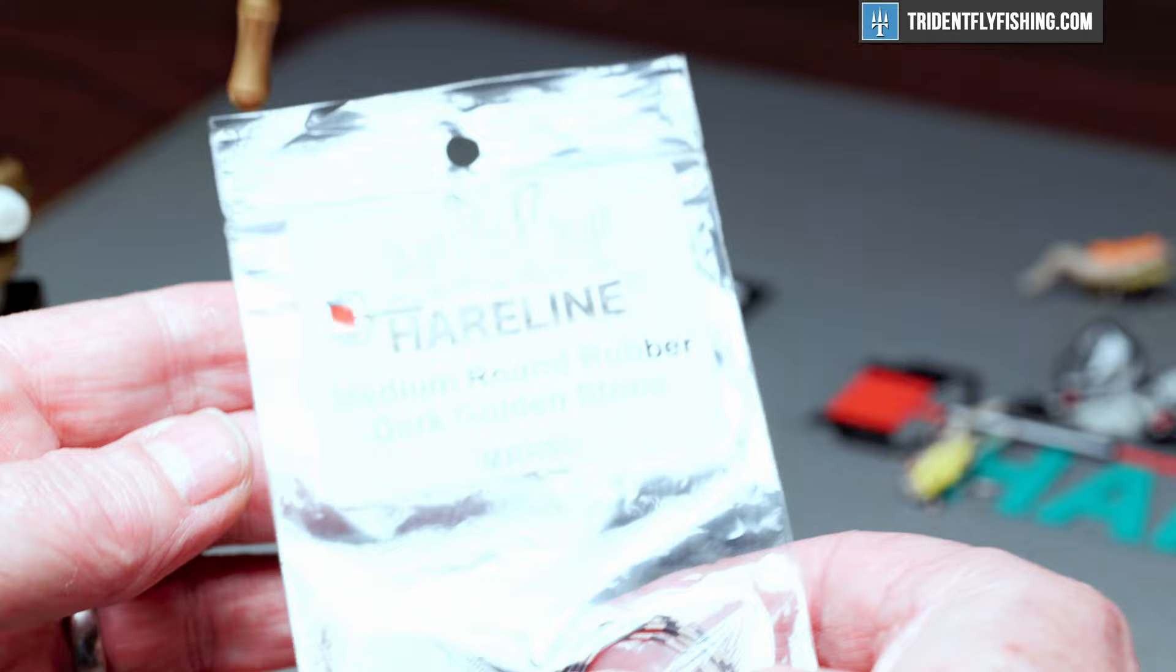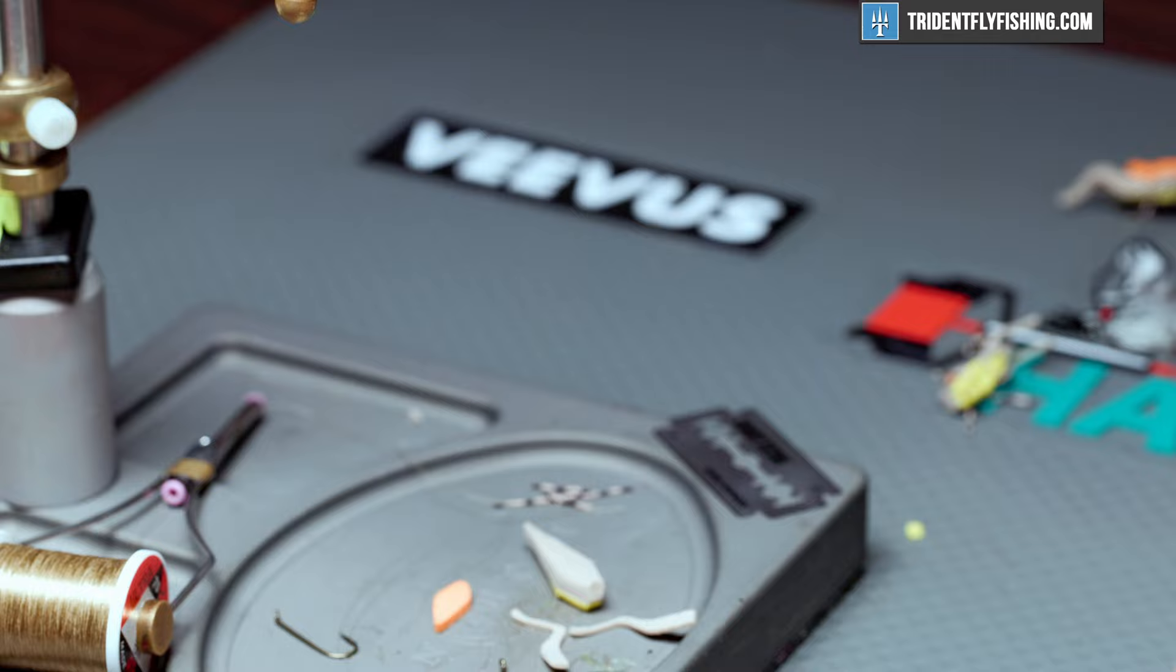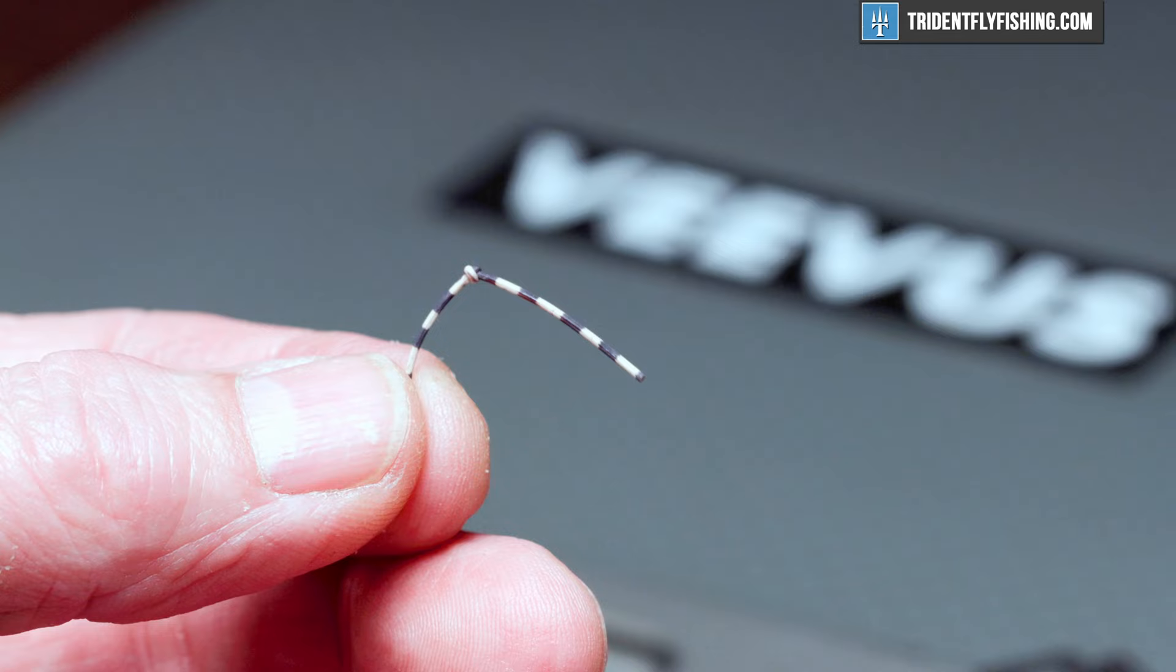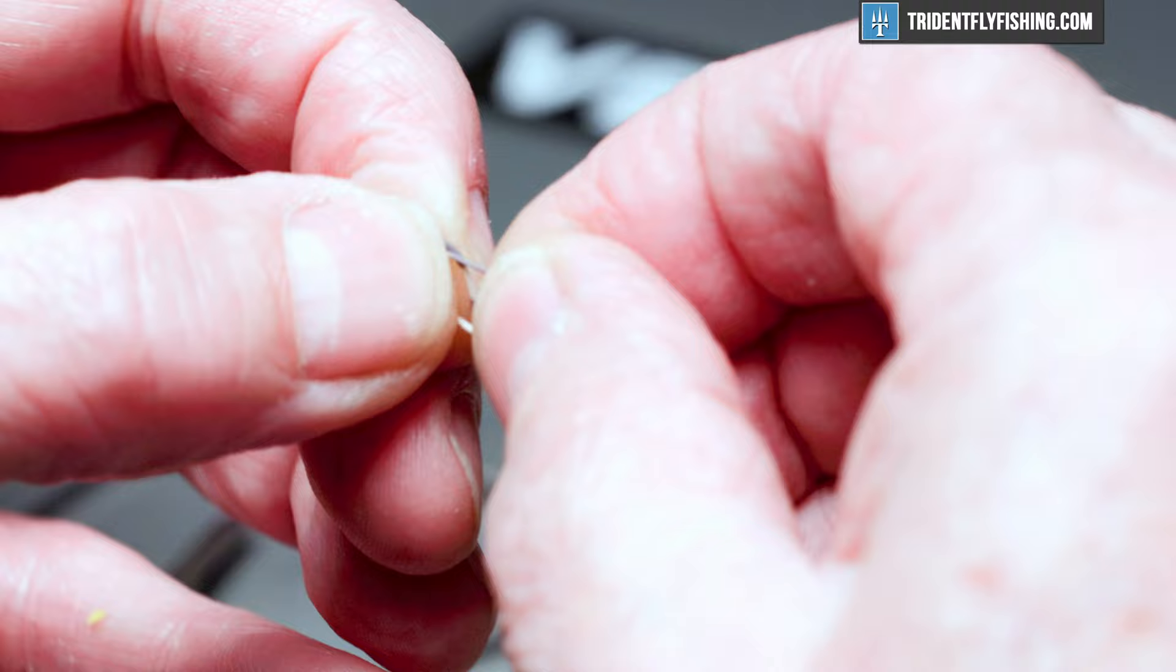And last there's some rubber legs. For that we're going to use some hairline medium round rubber legs. These are in a dark golden stone, it's kind of a tan color. And this is a finished leg. All it is is a piece of that round rubber leg that I've tied an overhand knot in and taken a dab of zap-a-gap and placed it over the knot to hold it in place. So easy to do.